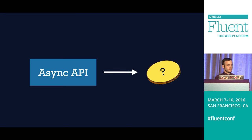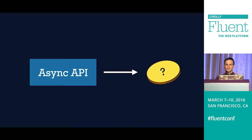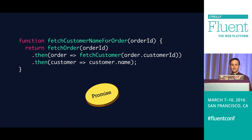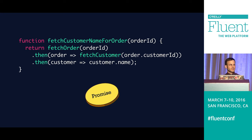So what if instead we flip the relationship? Instead of giving a token to our API, the API gives us a token — a promise — with the guarantee that once done, we can consume it and react to the fulfilled value. The promise flips that relationship. Fetch order returns a promise, and then I can chain together 'then' callbacks that handle the resolution: fetch customer, then get back the customer name. The benefit is more readable, flattened code where we can see the flow of the program more easily.